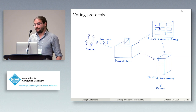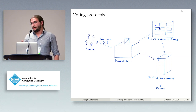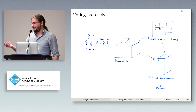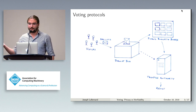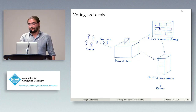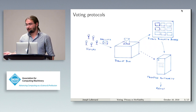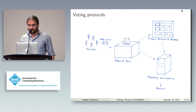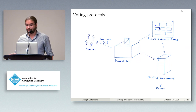Typically, there would be a pair of public and private keys generated at the beginning of the election. The voters would, for instance, encrypt their votes with the public key. And only the tallying authority would have the secret key that would allow it to decrypt the ballots.